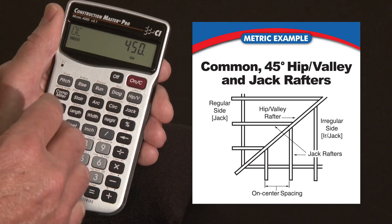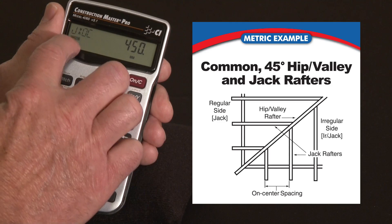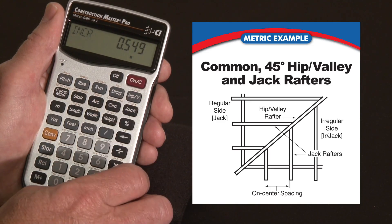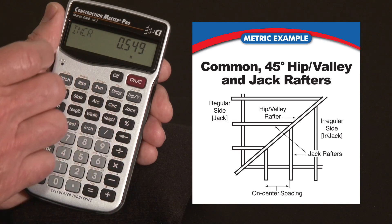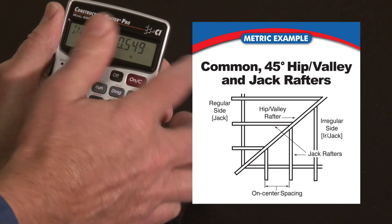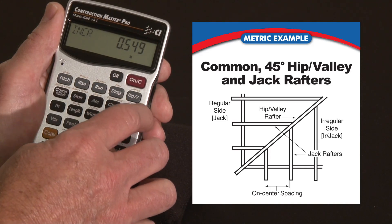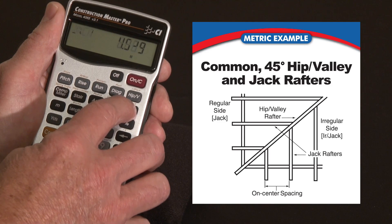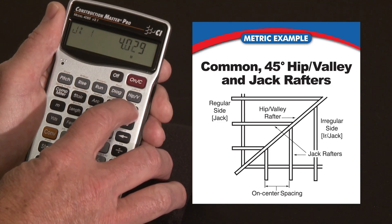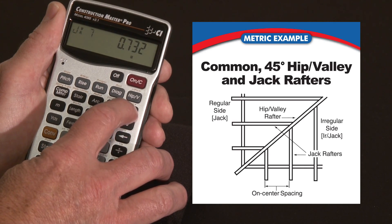That will stay in there permanently until you override it or do an all clear. Now I go back to the jack key and it says jack on center is now based on 450 millimeter spacing. Press it again — it gives the increment, the distance between the length of one and the next, which is going to be 549 millimeters shorter each time. So you can lay them out and cut them faster. Press it again: jack number one is going to be 4029 millimeters, then number two, number three, all the way down to the corner, shorter and shorter by that same increment.